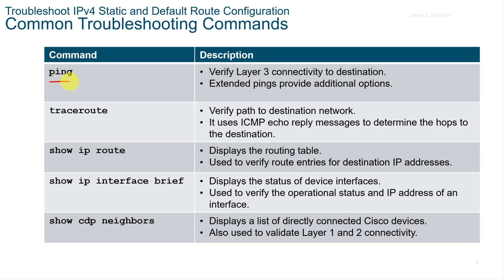The ping command verifies Layer 3 connectivity to a destination. Extended pings provide additional options. A recommended approach when on a PC is to first ping your local network card at 127.0.0.1, then ping your default gateway, then ping an IP address outside the default gateway to verify forwarding. The traceroute command verifies the path and uses ICMP echo reply messages to determine the hops.